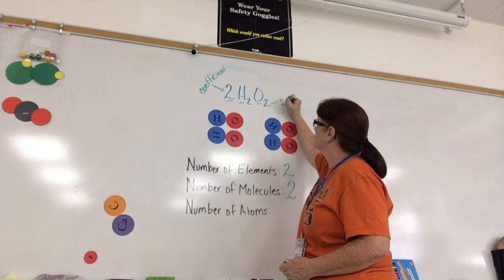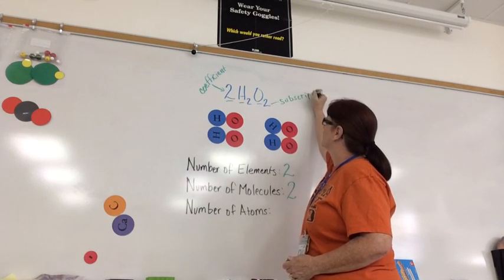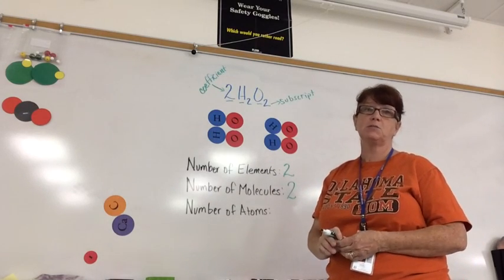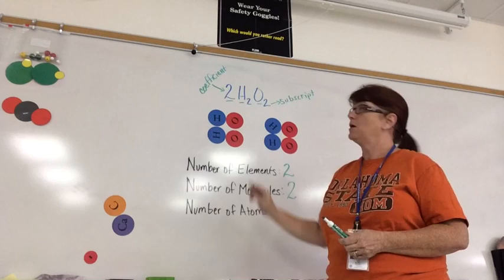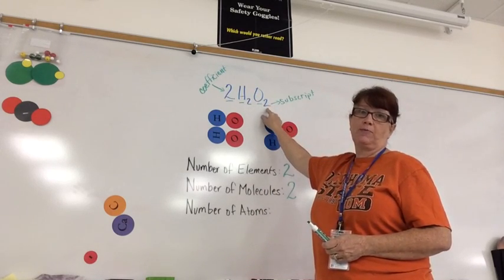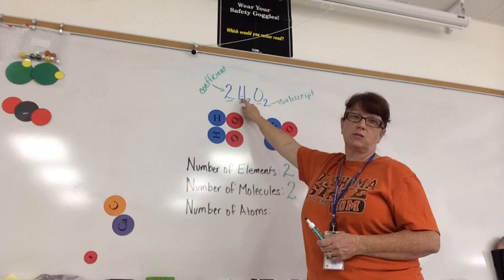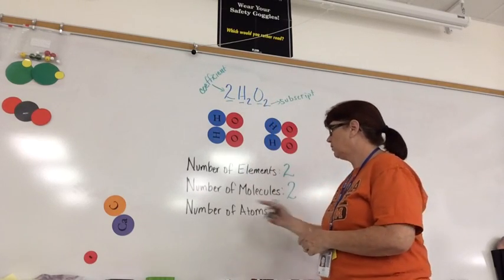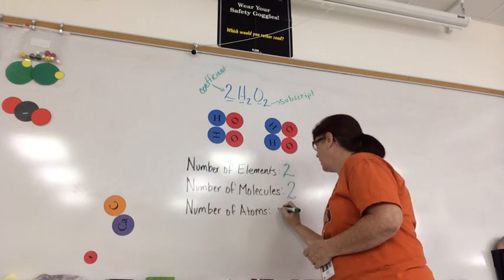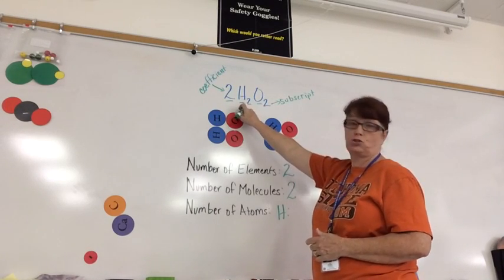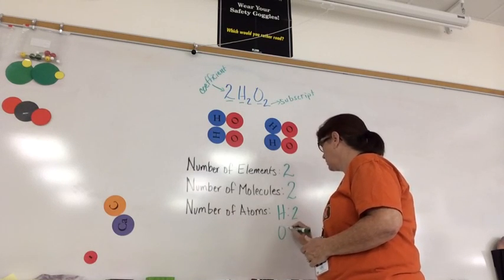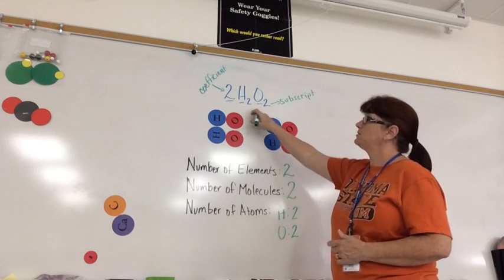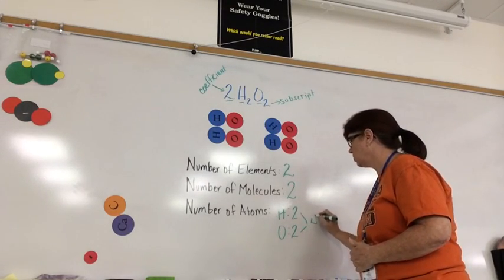The subscript tells me how many atoms of each element I have. It only applies to the element that it follows. So this 2 goes with this H and this 2 goes with this O. So when I look at number of atoms, I have hydrogen, I have 2, and oxygen, I have 2. When I add those together, I get a total of 4.